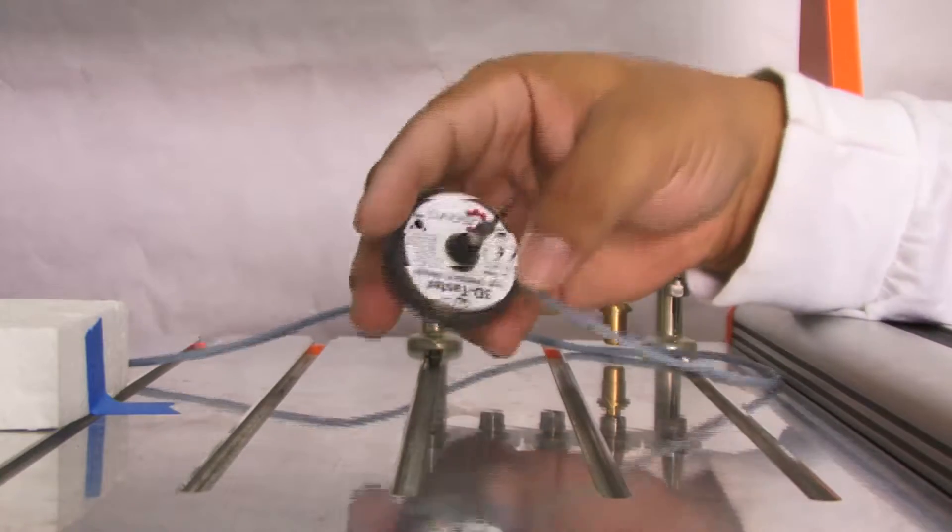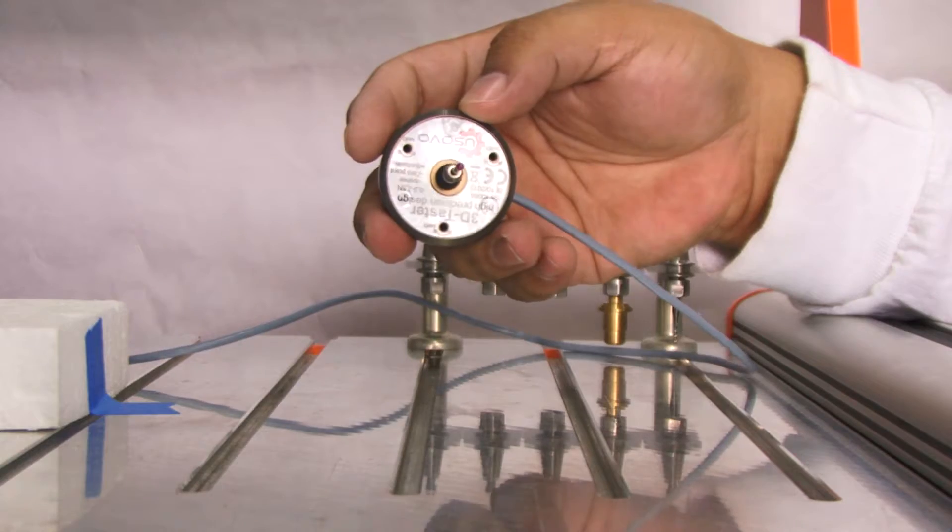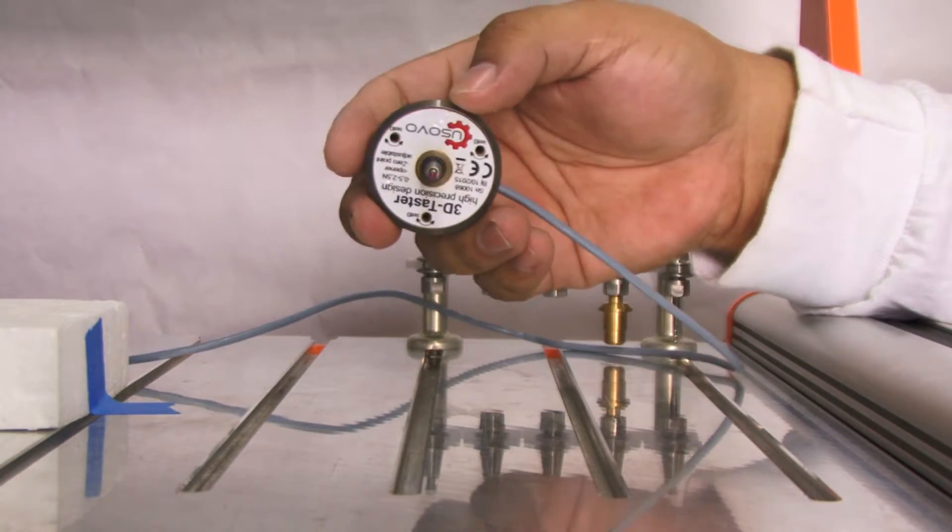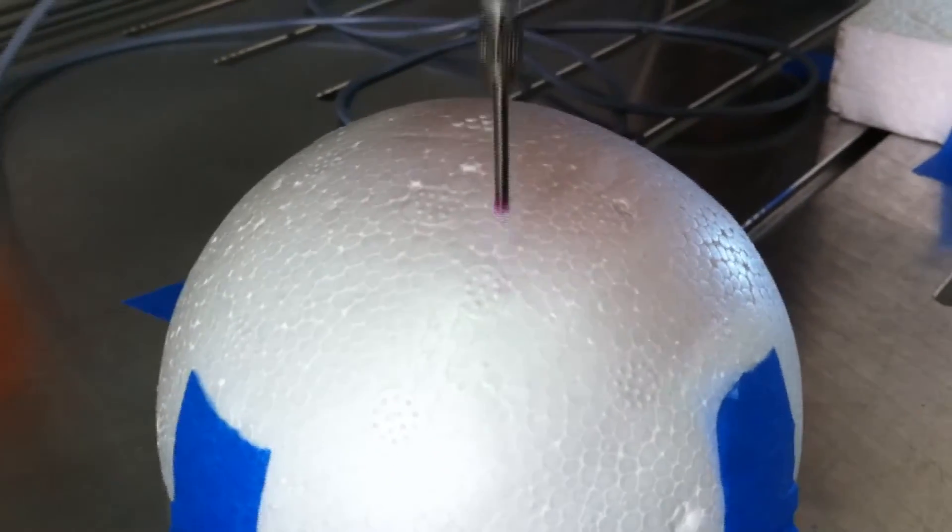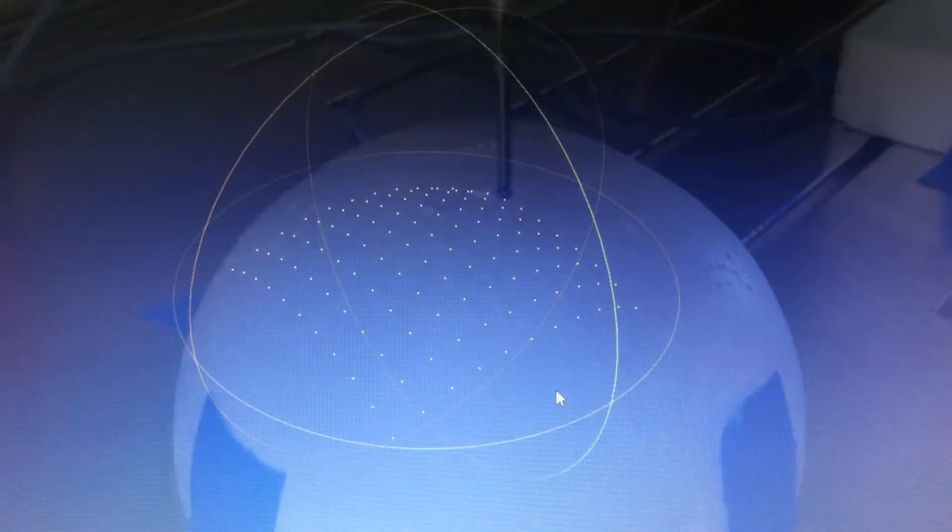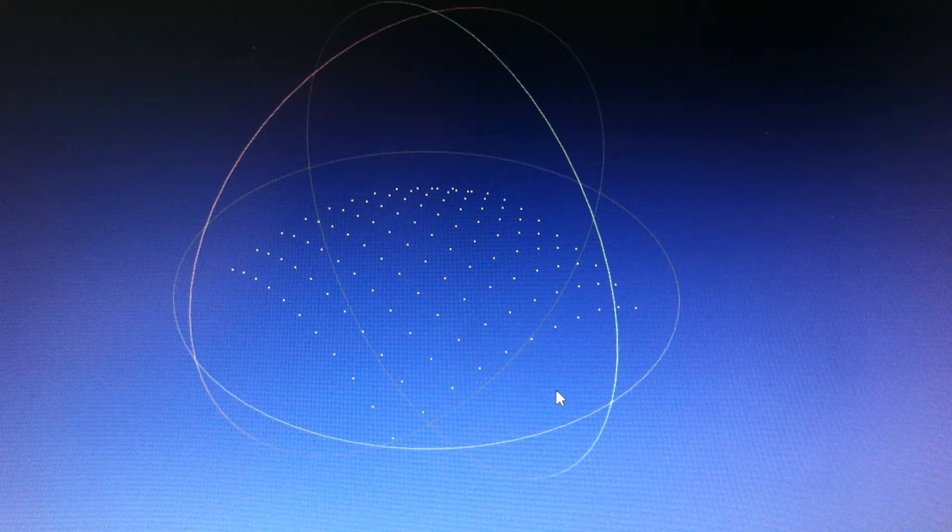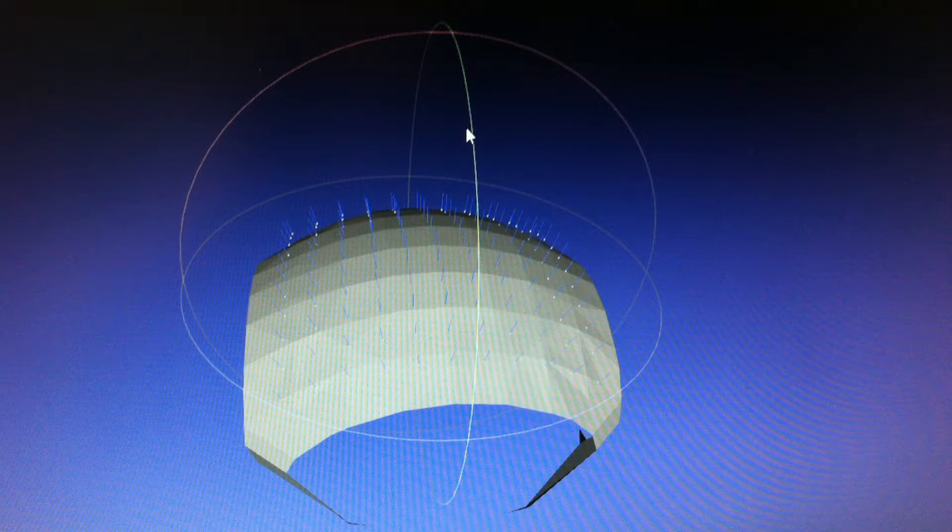Another cool thing that you can do with this is actually scan an object. If you have the point cloud when you're mapping the surface, you can have a 3D representation of an object and you can translate that to a software and rebuild the object. You can make another object based on the scan that you made with this.